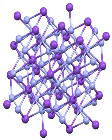KN3, rubidium nitride, cesium nitride, and TlN3 adopt the same crystal structures. They crystallize in a tetragonal habit. The azide is bound to eight cations in an eclipsed orientation, and the cations are bound to eight terminal nitrogen centers.